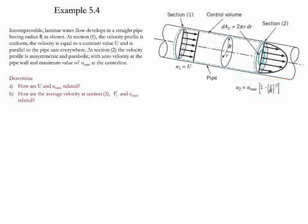We need to determine how u and u_max are related to each other, the average value of the velocity at section 2, and how u_max and v2 are related to each other.